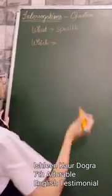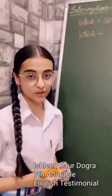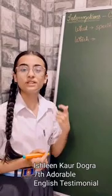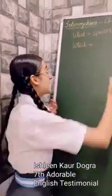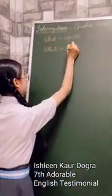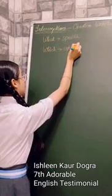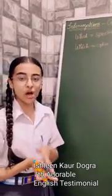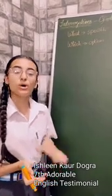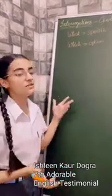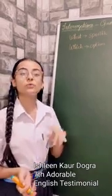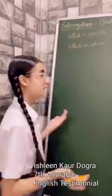Next comes 'which'. Which is also an interrogative. Which is used when we are asking, for example, 'Which subject do you like the most?' It is used when we are asking for options. Like 'Which subject do you like — Hindi or English?', 'Which is your first preference — home or school?' It is used when we are giving options to a person and they have to choose between two or more options given.